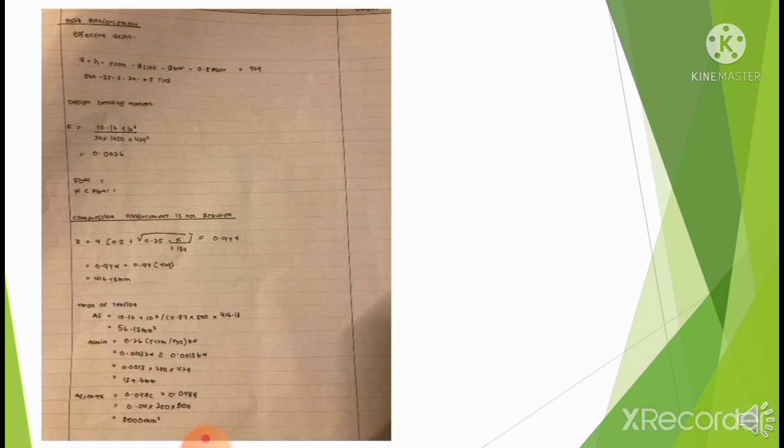The effective depth formula is K = H - 0.0 - link - bar - 0.5 bar. The answer is 429mm. To find the bed design bending: DLK = 10.16 × 10^6 divided by (20 × 1.0 × 429²), giving 0.0026. For the tension area formula: AS = 10.16 × 10^6 divided by (0.8 × 500 × 416.13), answer is 56.13 mm².